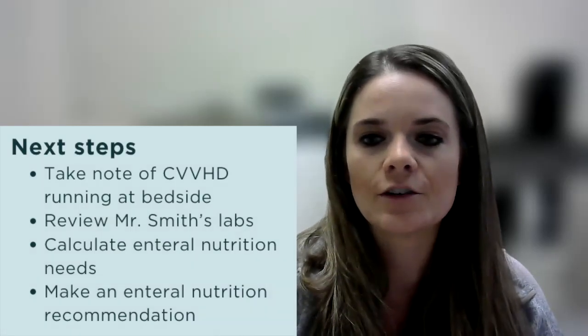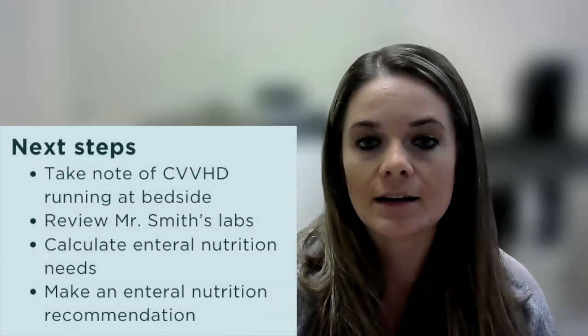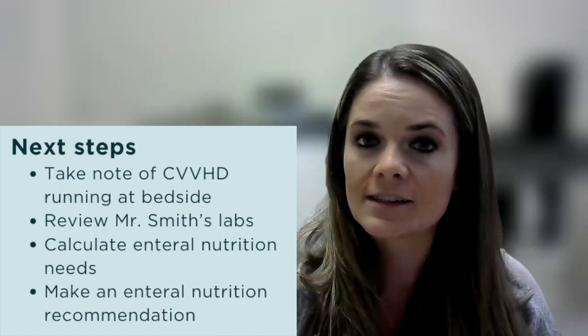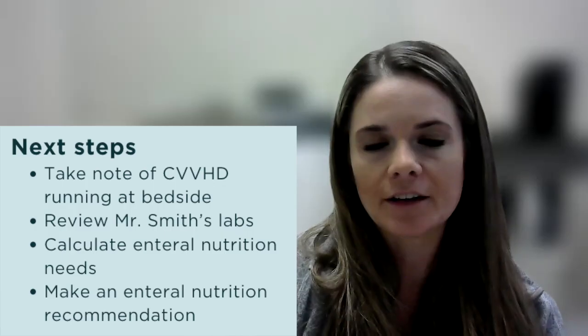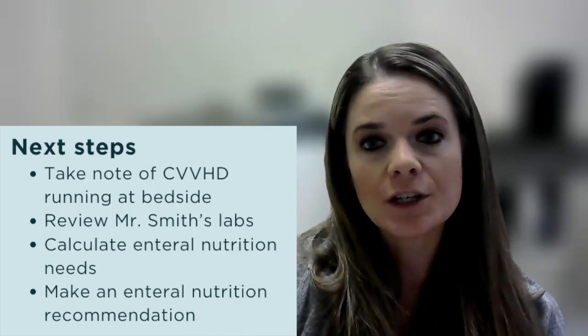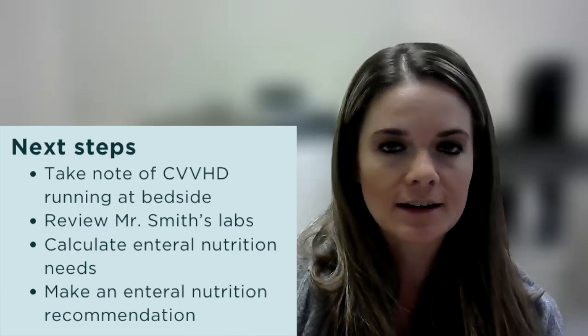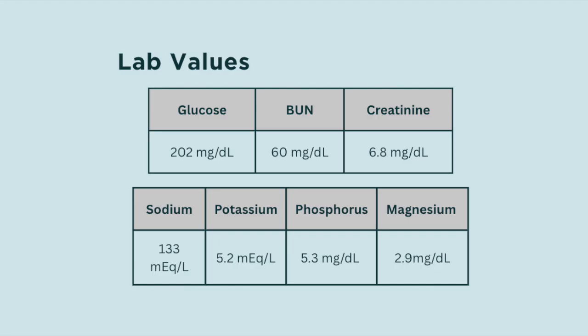You also observe the continuous venovenous hemodialysis machine at the patient's bedside, filtering his blood over 24 hours. Reviewing his labs: glucose 202, BUN 60, creatinine 6.8, sodium 133, potassium 5.2, phosphorus 5.3, and magnesium 2.9 — all indicating renal failure and hyperglycemia.